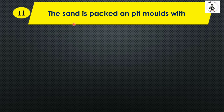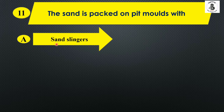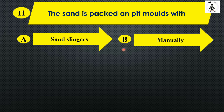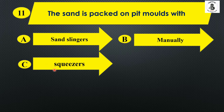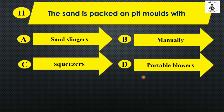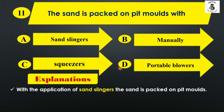The sand is packed on a peat mold by: Option A: sand slinger, Option B: manually, Option C: squeezers, and Option D: portable blowers. Sand slingers are used to pack the sand onto the peat mold. So the right answer is Option A.